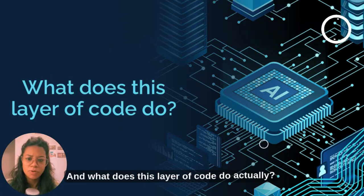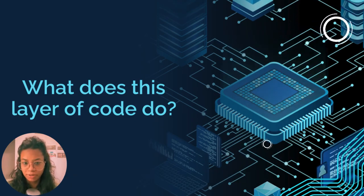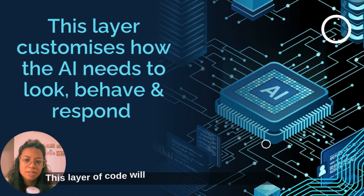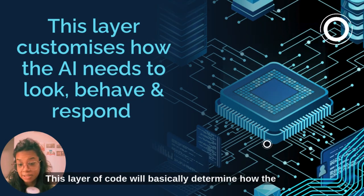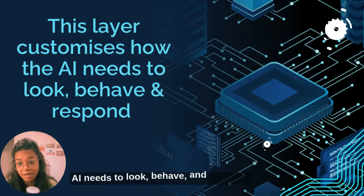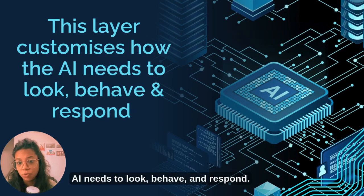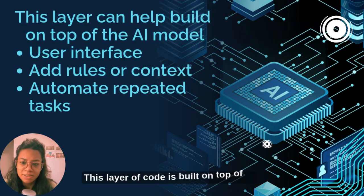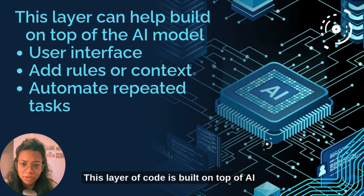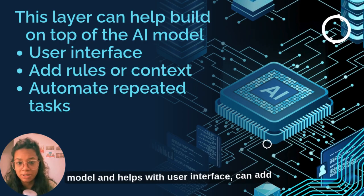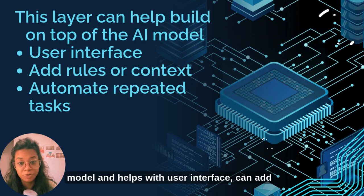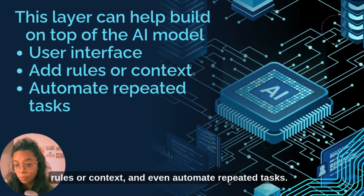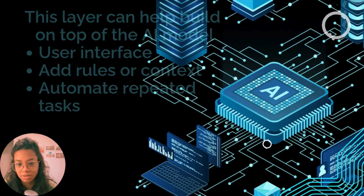What does this layer of code do actually? It will basically determine how the AI needs to look, behave, and respond. This layer of code is built on top of the AI model and helps with the user interface, can add rules or context, and even automate repeated tasks.